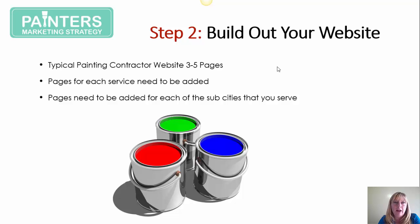SEO, or search engine optimization, is the process of getting your website to show up in the organic or free section of the search engine results. There are specific things you can do both on and off your website to ensure you show up when somebody types in keywords relevant to your business — for example, 'painting contractor' plus your city into Google, Yahoo, or Bing.